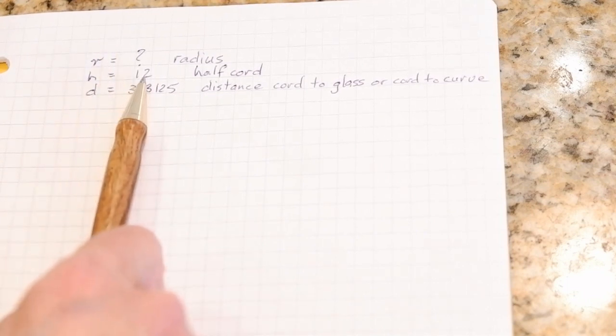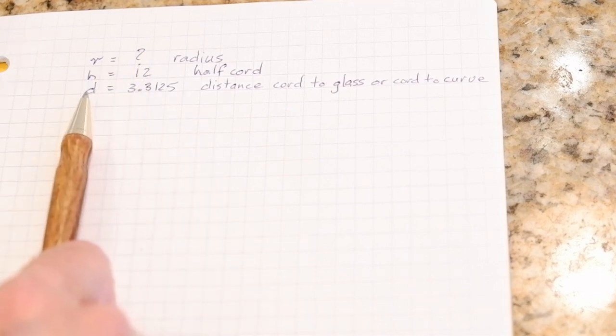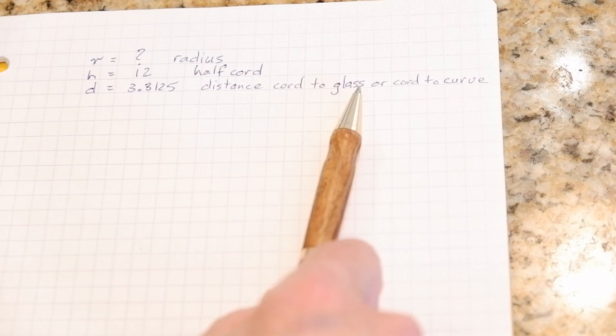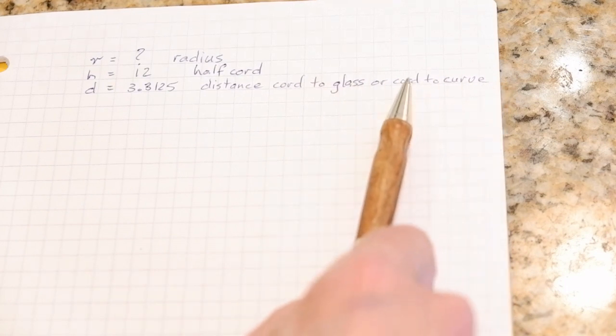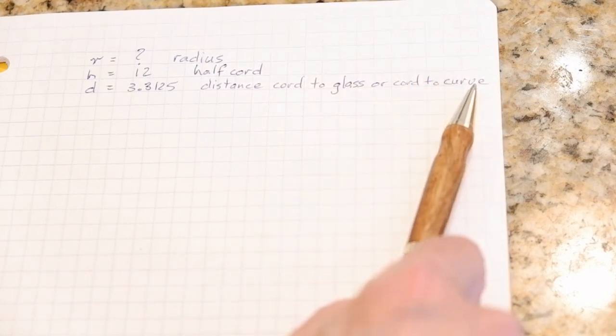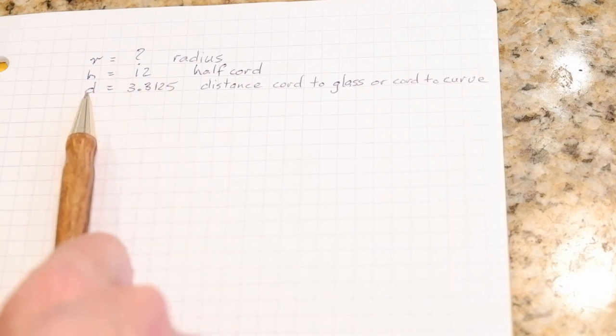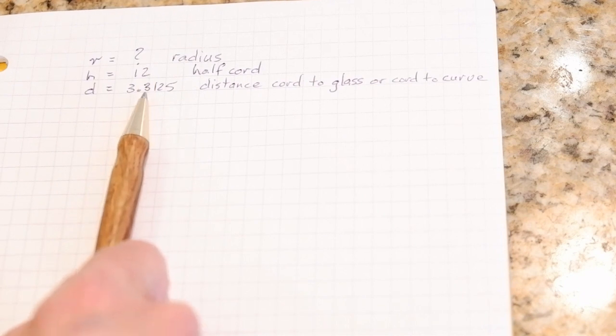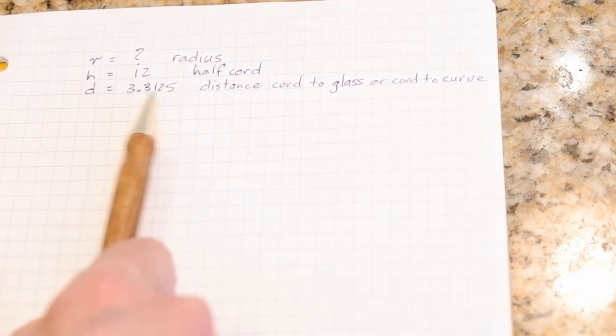And D we measured that. Now that's the distance from the chord to the glass, or if you like, from the chord to the curve. So that came out as three and five-sixteenths, which would be represented this way if you went with the full decimal notation.